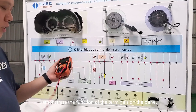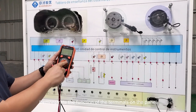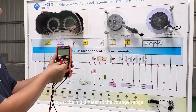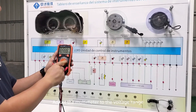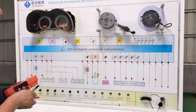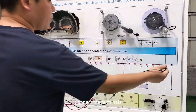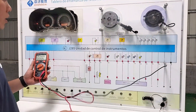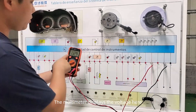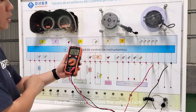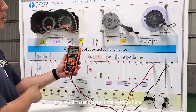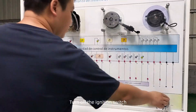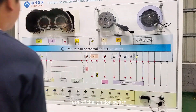Demonstrate the function of the terminals on the panel. Adjust the multimeter to the voltage range and turn on the ignition switch. Connect the terminals — the multimeter displays the voltage. Demonstration completed. Turn off the ignition switch.